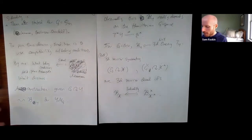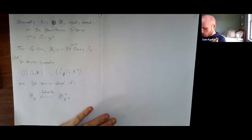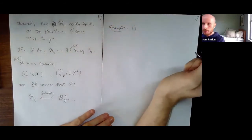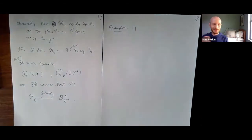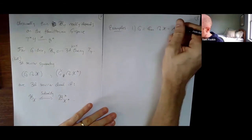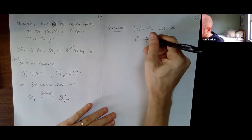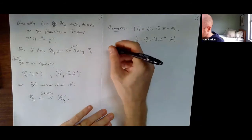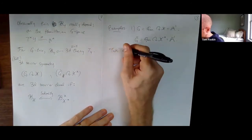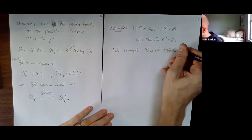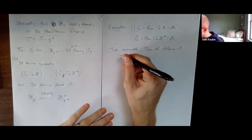Let me give a couple of examples. One is G = G_m acting on X = A1. The dual group is also G_m and it acts on X-star = A1. This is what people sometimes call the Tate example. This is basically going to be the theorem of Justin and myself — we have an equivalence of categories of local operators with the requisite symmetry, though no global aspects yet. Those are sort of unwritten for now.